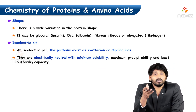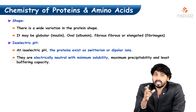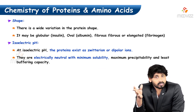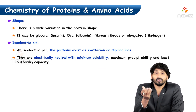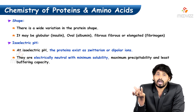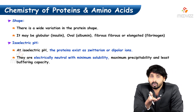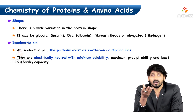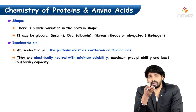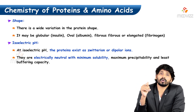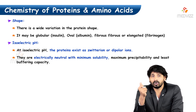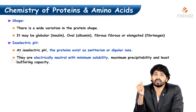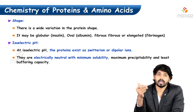Talking about shape, there is a wide difference in protein shape. Few proteins exhibit globular shape, few proteins exhibit oval shape, and few are fibrous in nature, and few are elongated. For globular proteins, you can give the example of insulin; for oval proteins, albumin; and for fibrous proteins, fibrinogen.